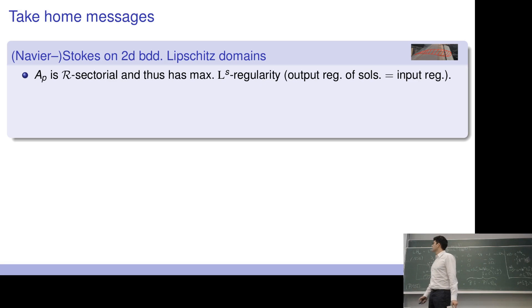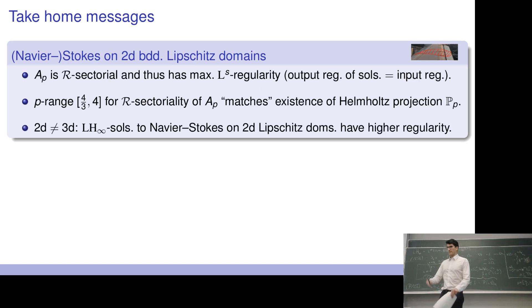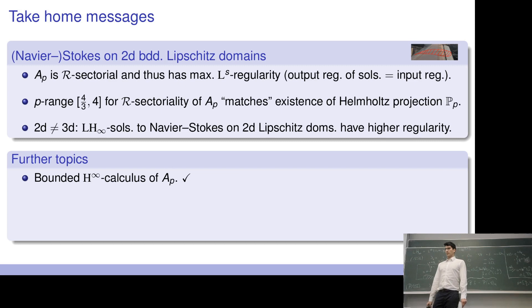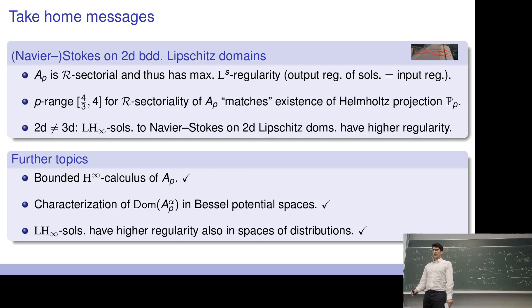What to take home from this talk: the Stokes operator is sectorial and therefore has Ls maximal regularity. The p-range for R-sectoriality of the Stokes operator is exactly the one for the Helmholtz projection. Compared to the three-dimensional case on Lipschitz domains, we have higher regularity in the planar case. Further results we could not cover today: the Stokes operator also has a bounded H∞-calculus; we can characterize some of the domains of the Stokes operator; and a similar result holds if right-hand sides come from spaces of distributions. Thanks again for having me, and I look forward to your questions.